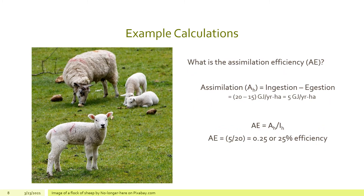First, we tackle assimilation efficiency. Assimilation equals the amount ingested minus the amount egested. The sheep ingested 20 gigajoules per year per hectare and egested 15, so they assimilated only 5 gigajoules per year per hectare. Plugging into the equation: AE equals A sub H (5) over I sub H (20), giving an assimilation efficiency of 0.25, or 25 percent.